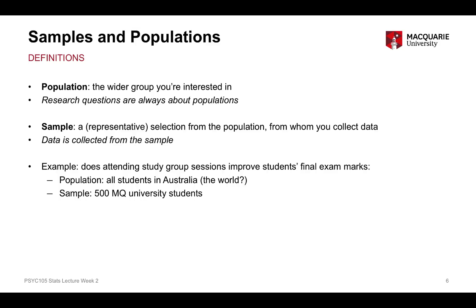My sample, on the other hand, could be just 500 students from Macquarie University. I could ask them questions about their study habits and measure their final exam marks to see if there's an association between study group sessions and final exam marks. So the sample are the people from whom you actually collect the data, while the population is the wider group of people to whom the research question applies.